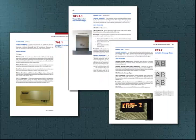A number of changes occurred that affect the signage requirements of Chapter 7. This slide shows some of the examples, including pages that address a new scoping section for the sign provisions, guidance to the proper requirements and sections for each type of sign, and a new section to address variable message signs, or VMS.